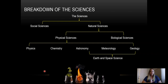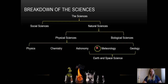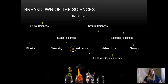The sciences cover the social sciences and natural sciences, and then within natural sciences we have physical sciences and biological sciences. Within physical sciences we have physics, chemistry, astronomy, meteorology, and geology. The earth and space sciences are referring to astronomy, meteorology, and geology.